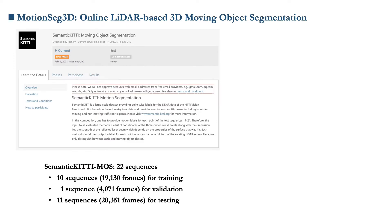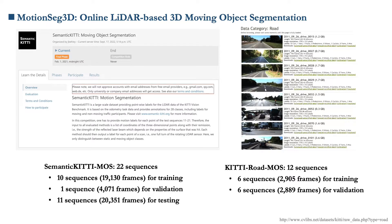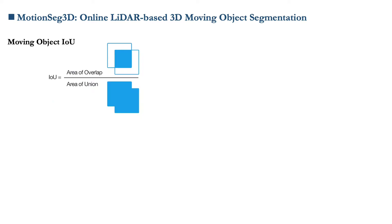We train and evaluate our method on the Semantic KITTY MOS dataset, which contains 22 sequences — 10 for training, 1 for validation, and 11 for testing. To enrich this field and alleviate the gap between validation and test sets, we additionally annotate 12 sequences of KITTY Road, with 6 for training and 6 for validation. Following the protocols of LMNet, we report the Intersection over Union (IoU) metric on moving objects to quantify MOS performance.